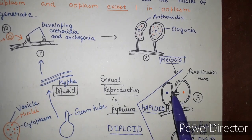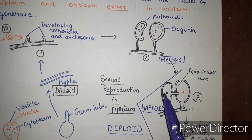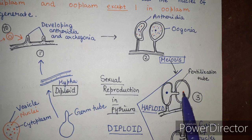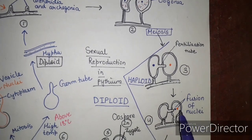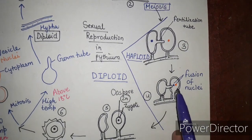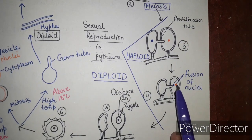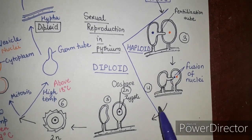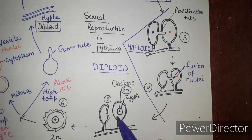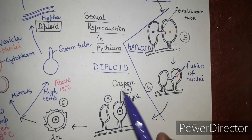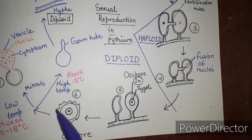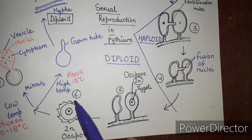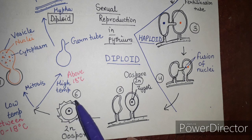The anthridium gives out a fertilization tube through which the nucleus of the anthridium moves into the oogonia and fuses with the nucleus of the oogonia. Both fusing nuclei are haploid. This fusion forms a zygote, which represents the diploid stage. The zygote then forms a thick-walled structure called the oospore, which has a thick ornamental wall around it.